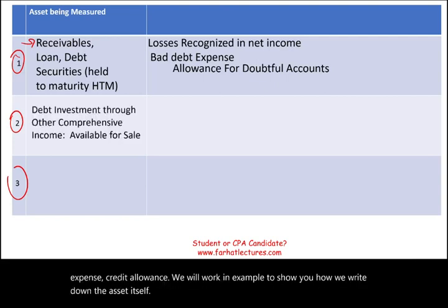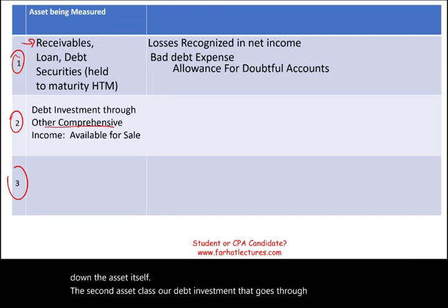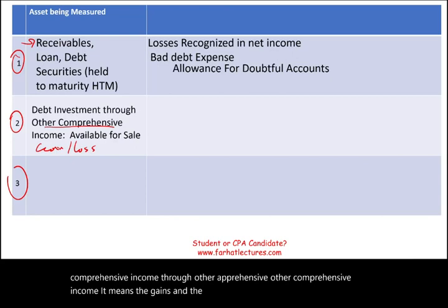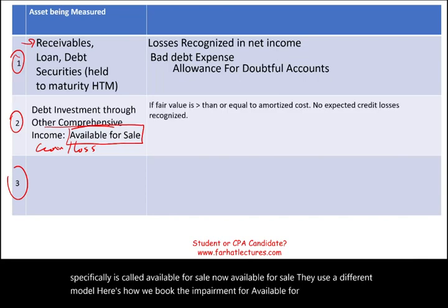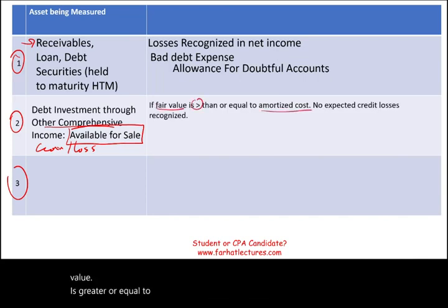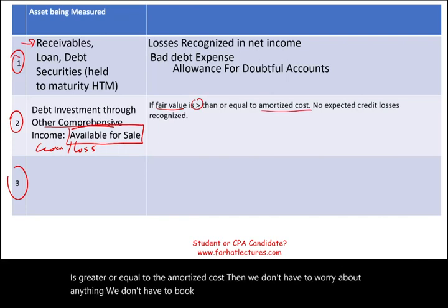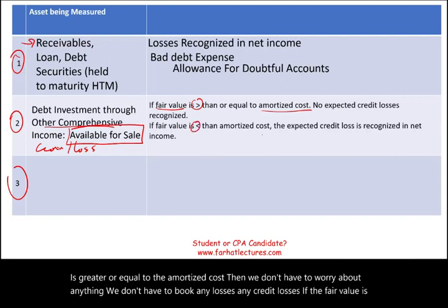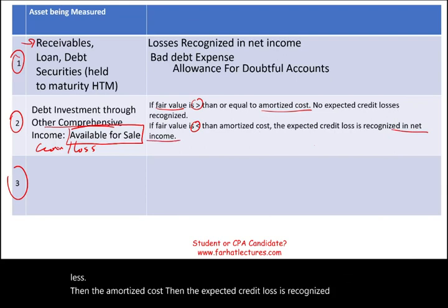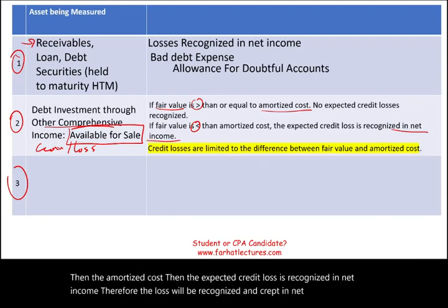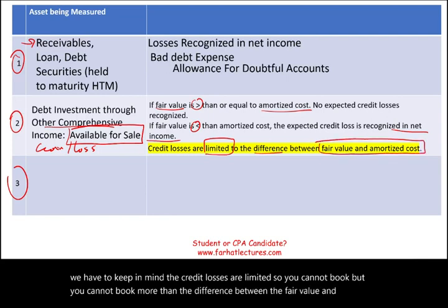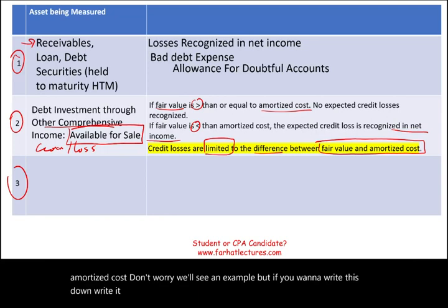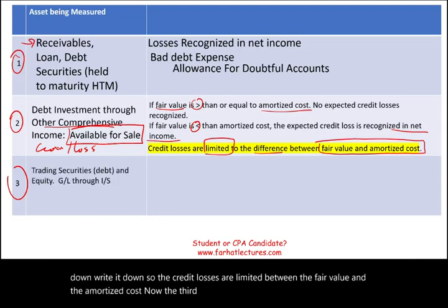The second asset class is debt investments that go through Other Comprehensive Income (OCI) — specifically called Available for Sale (AFS). For AFS securities, the rules are different. If the fair value is greater than or equal to the amortized cost, no credit losses need to be recognized. If the fair value is less than the amortized cost, the expected credit loss is recognized in net income. However, credit losses are limited — you cannot book more than the difference between the fair value and the amortized cost.